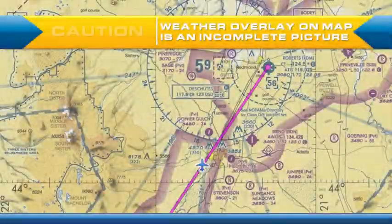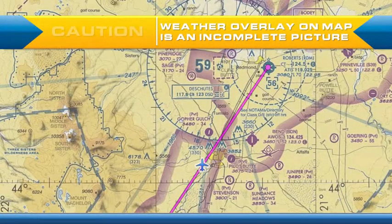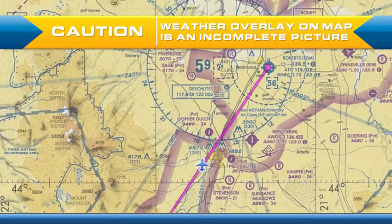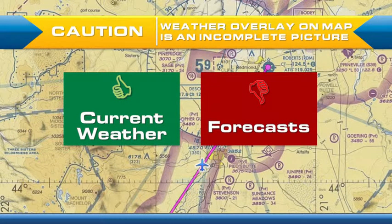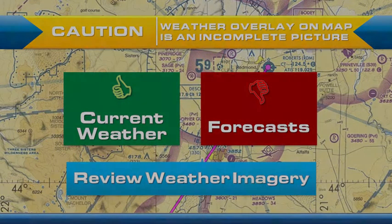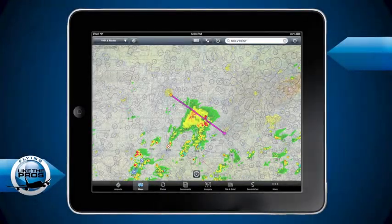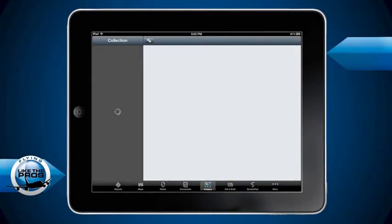Now, we do have a caution for you. That caution is the weather overlay on the moving map does not complete the full picture of the weather. All it does is show you the current weather - it does not show you the weather forecasted in the future. So what we're going to need to do is look at the forecast weather imagery, which we can find by pressing the imagery tab.